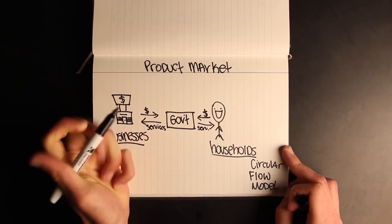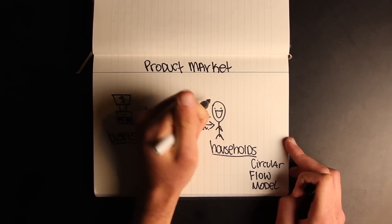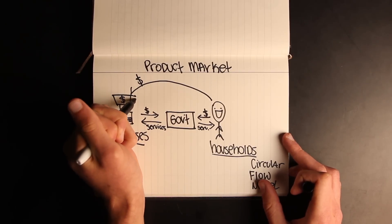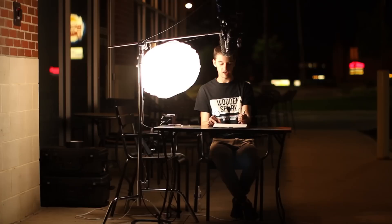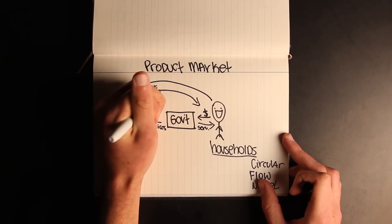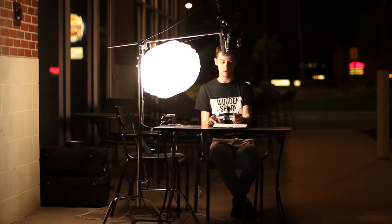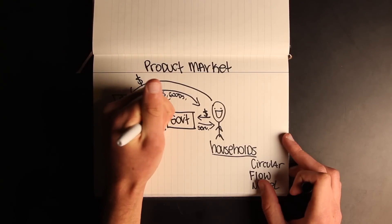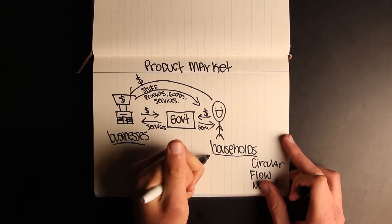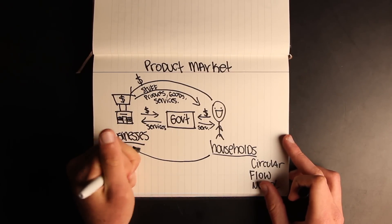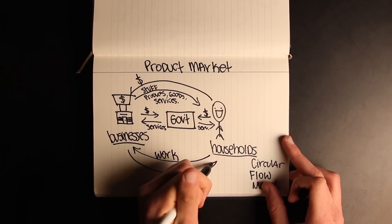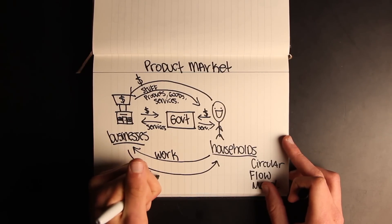When people or consumers want to buy things, they give money to businesses, and in return the businesses provide them with stuff — anything from products, goods, or services. For businesses to provide that stuff, they need workers or human capital, so people provide businesses with work, and in return businesses pay people money in wages.